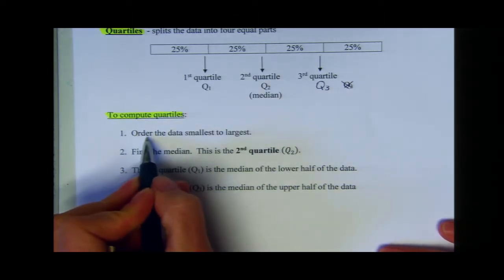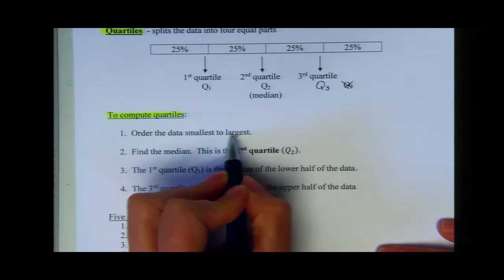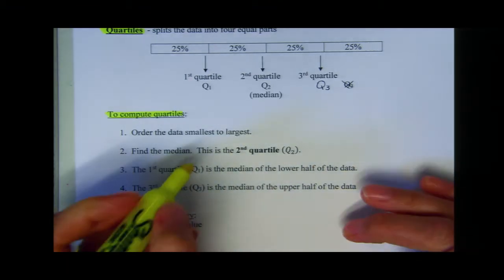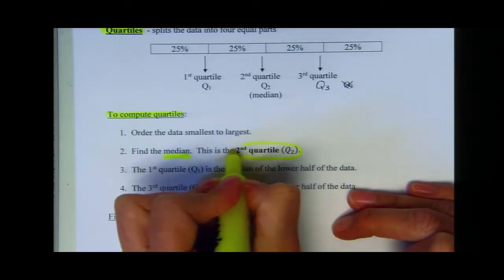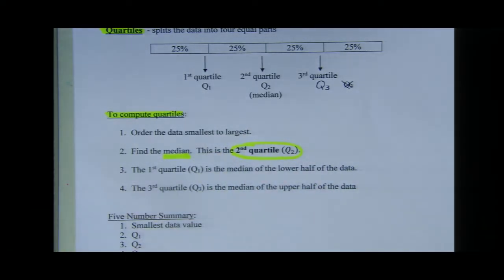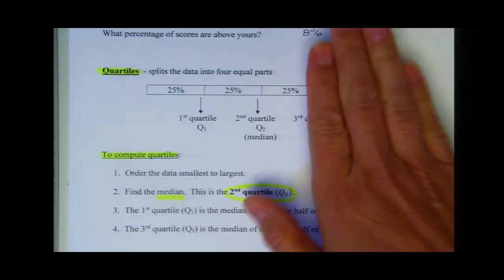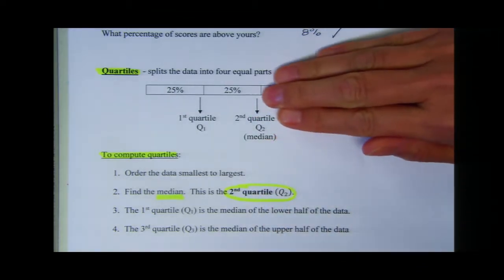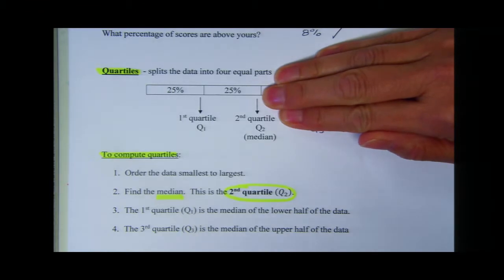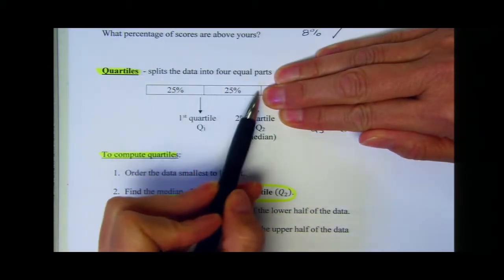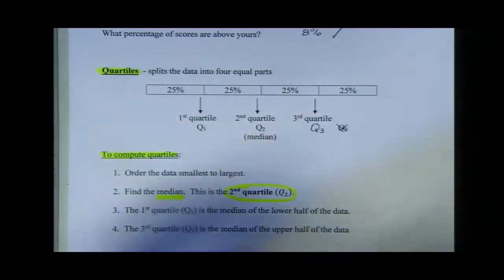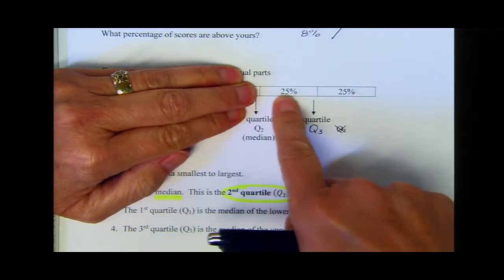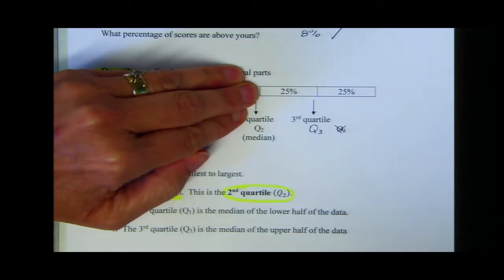First, place your numbers in order from smallest to largest. Then find the median of your complete set of data — this is quartile two, so you always find quartile two first. Then disregard the top half of the data, use the lower 50%, and find the median of the lower 50% — that's quartile one. Then find the median of the upper half of the data — that is quartile three.